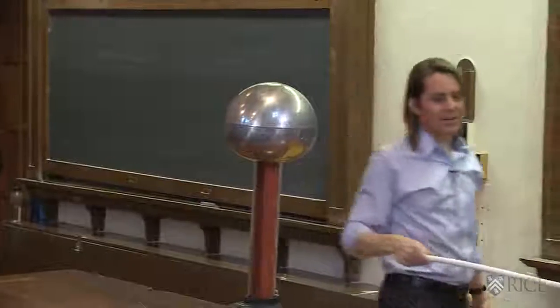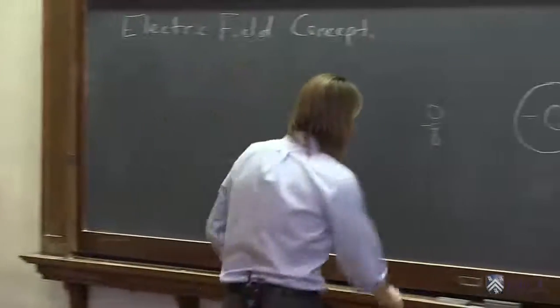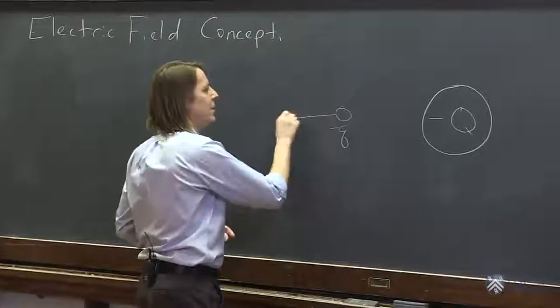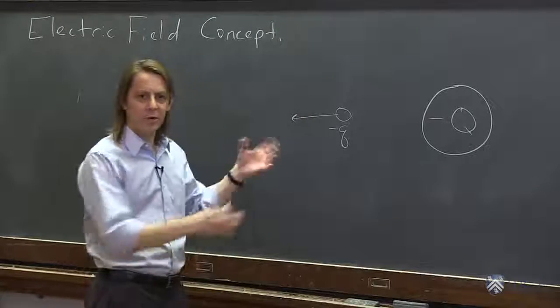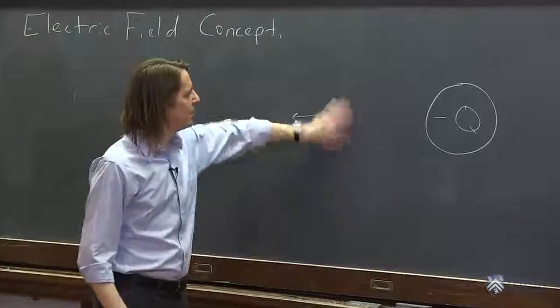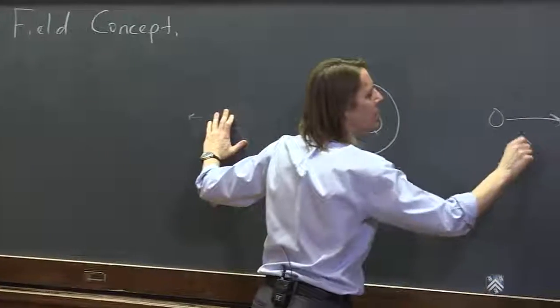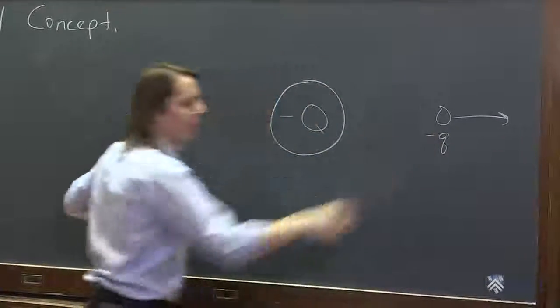This is the idea of the electric field. When the sphere sees a negative charge over here, it creates a repulsive force, because like charges repel. But if we take it away, and we put it over here, it creates a repulsive force that way.